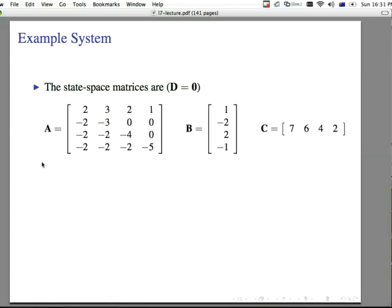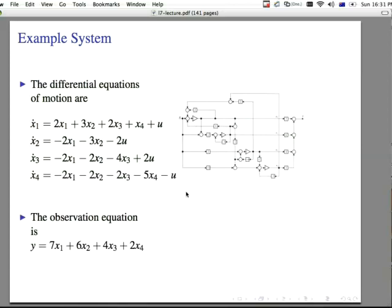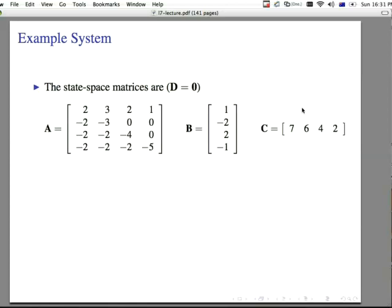So if we write this out, the state space matrices are A, B, and C. And then D is equal to zero because there's no link, if you look here, there's no direct link between U and Y. It all goes through the state.